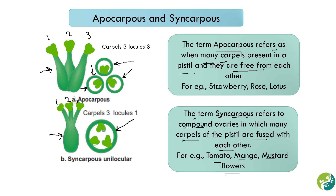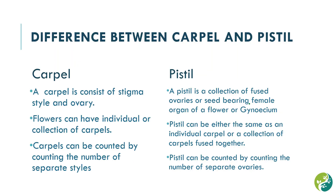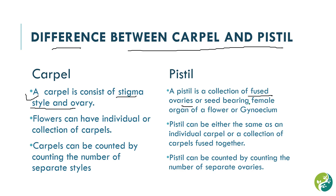Examples of syncarpous ovaries are tomato, mango, and mustard flowers, while examples of apocarpous ovaries are strawberry, rose, and lotus. Now let's recall the difference between carpel and pistil: a carpel consists of stigma, style, and ovary, whereas a pistil is a collection of fused ovaries — or the seed-bearing female organ of a flower — also called the gynoecium.